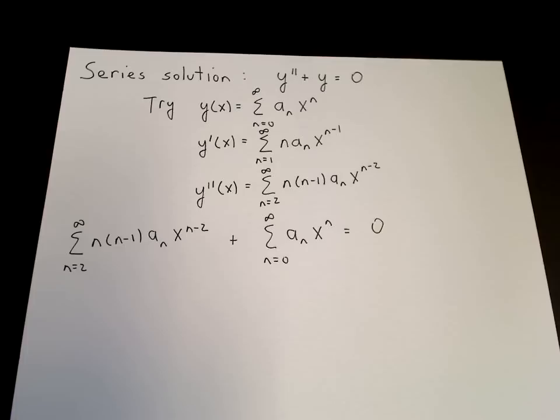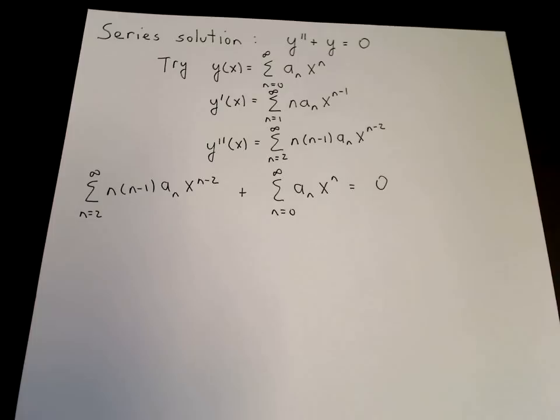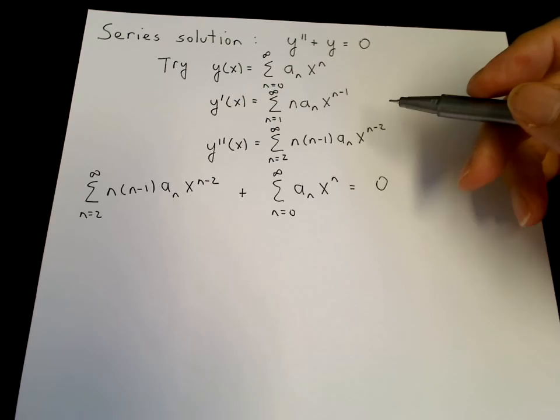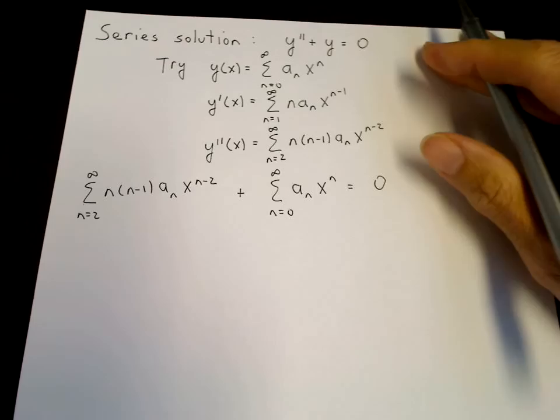At this point, we need to write the left-hand side as a single power series, after which we can set the coefficients of powers of x equal to zero. To write as a single power series, we need to change the index of the first term from x to the n minus 2 to x to the n.